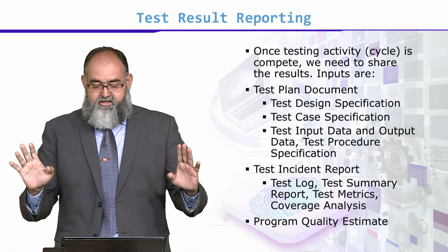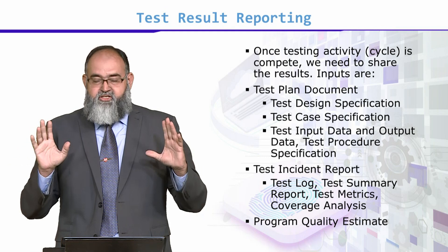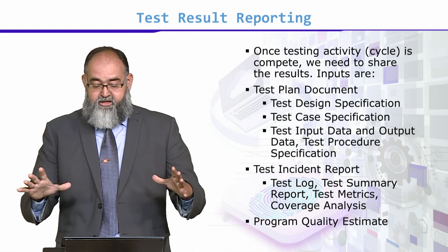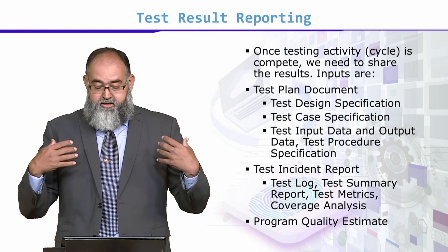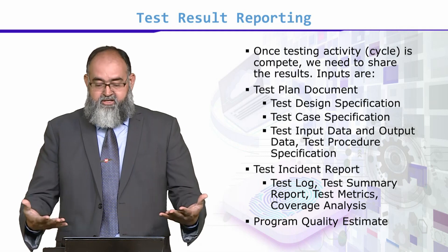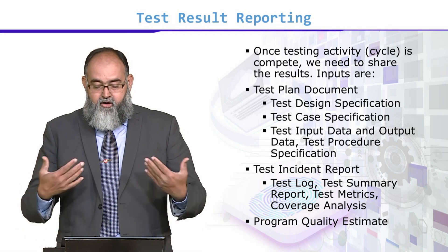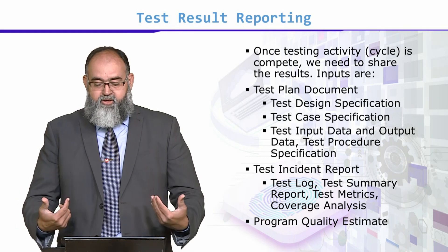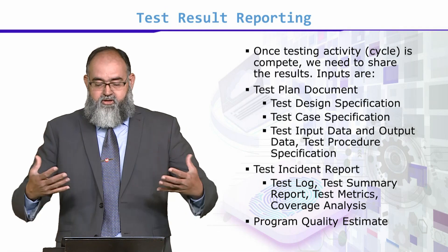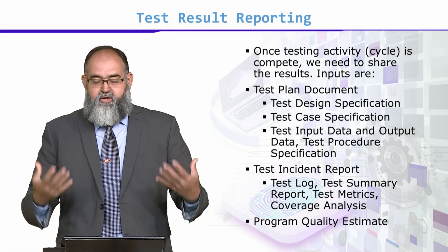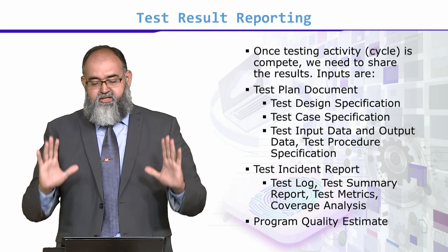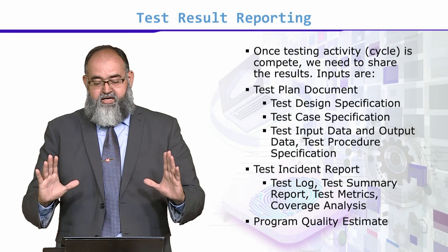What are the outputs? Test incident report, test log, test summary, test metrics, coverage analysis — and the other major output is the product or program quality estimate. This is a very powerful output that we have reached.